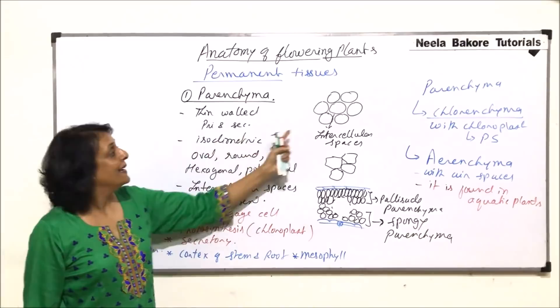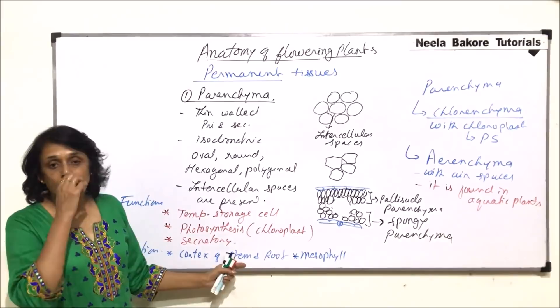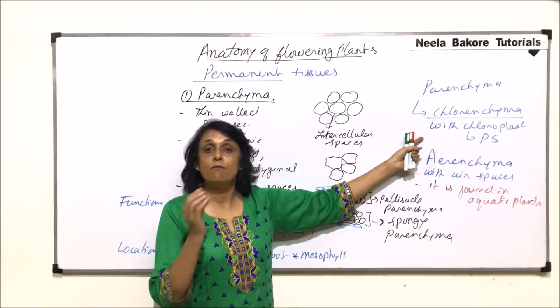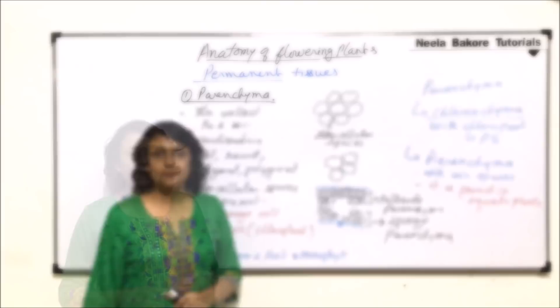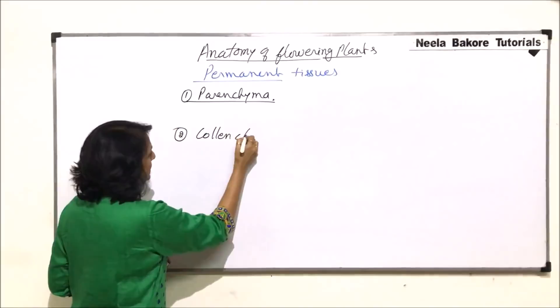To summarize parenchyma: thin walls, variable shapes, and intercellular spaces are very distinct. Functions include temporary storage, photosynthesis, and secretory activity. Location is the cortex of stem and root, and in the leaf. Now we will discuss the second type of tissue, that is collenchyma. Parenchyma with chloroplast is called chlorenchyma; the next one we are talking about now is collenchyma.